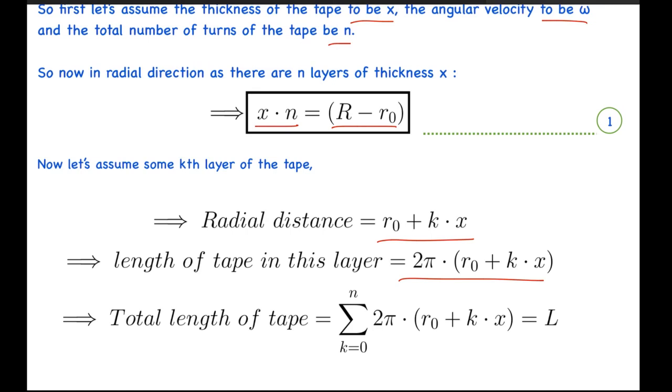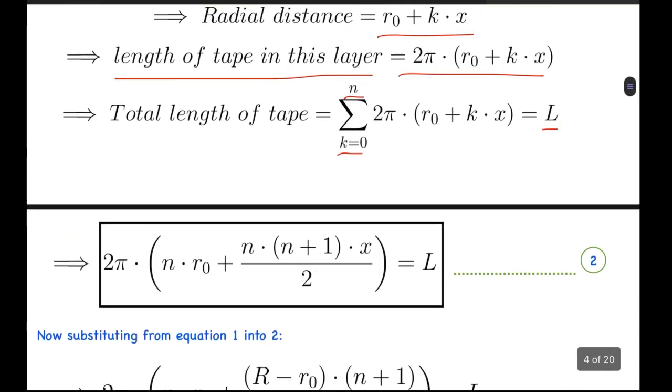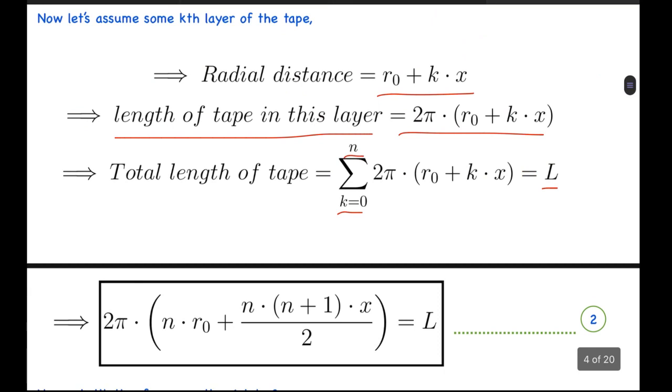From here, if we sum this length of the tape in the layer from k equals 0 to n, we are eventually summing the whole tape, so this should equal L. From here, what we can get is 2π times n·r0 plus n(n+1)/2 times x. The sum of sigma k from k equals 0 to n will be n(n+1)/2, and that of 1 will be n.